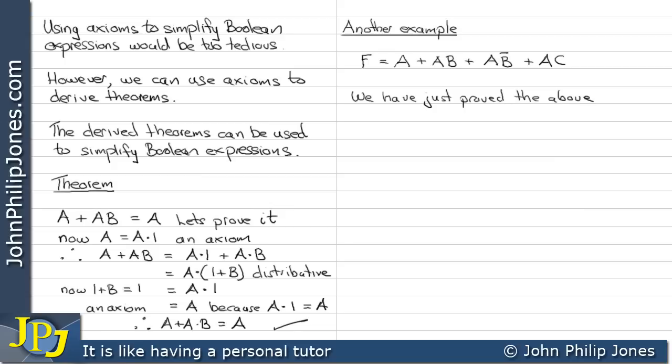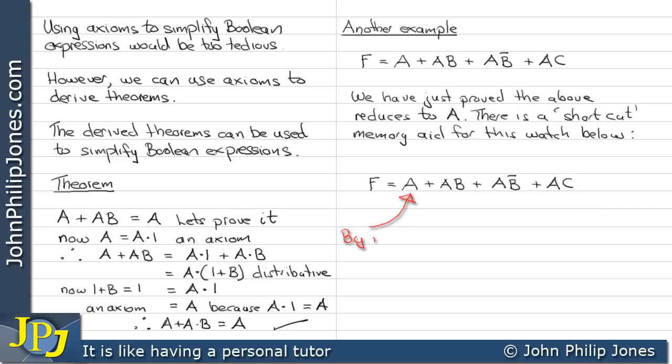We have just proved that the above reduces to A. Now there's a shortcut memory aid for this. Watch below. When we have a variable by itself, as here with A, that's enough to knock out every min term that contains the A, giving us in this case the result of A.